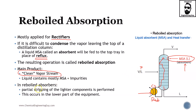In reboil absorbers, partial stripping of the lighter component is performed. This occurs in the lower part of the equipment, right here. Now try to guess what the composition of the gas formed in the reboiler and the liquid formed here will be. Hopefully you can see clearly that this reboiler is acting and is very important in this unit operation — without it, certain absorptions would not be achieved at as high a percentage, or maybe nothing would be achieved at all.